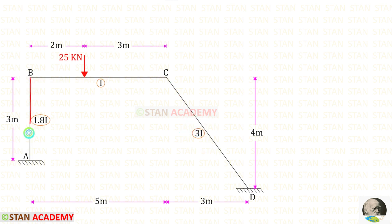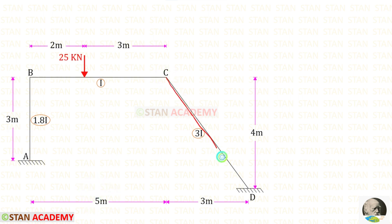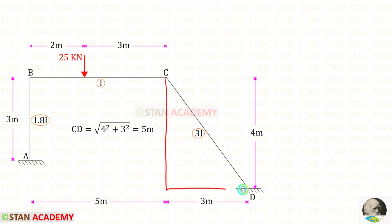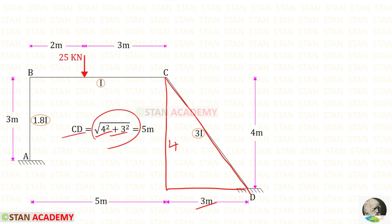The height of AB is 3 m and the length of BC is 5 m. We need to find the inclined length of CD. Using Pythagoras theorem on the triangle, the root of 4 squared plus 3 squared gives us the length of CD, which is 5 m.